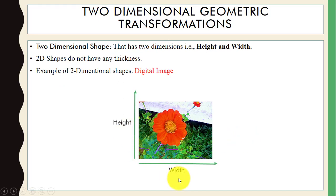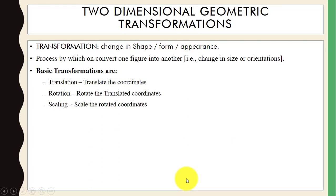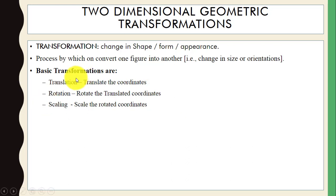A digital image is also two-dimensional — there is no thickness, just height and width. Transformation means a change in shape, form, or appearance. Transformation is a process by which we can convert one figure into another — we can change the size or orientation of an object. We have three basic types of transformation: translation, rotation, and scaling.